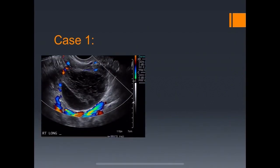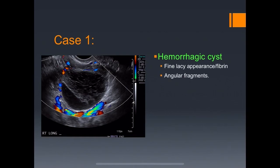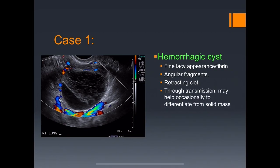Case one: right adnexal pain. This is typical of a hemorrhagic cyst — it has a lacy appearance with angular fragments and lines, consistent with a retracting clot. Through-transmission may help differentiate this from solid masses. It usually resolves in 6 to 12 weeks but can lead to ovarian torsion if large enough.